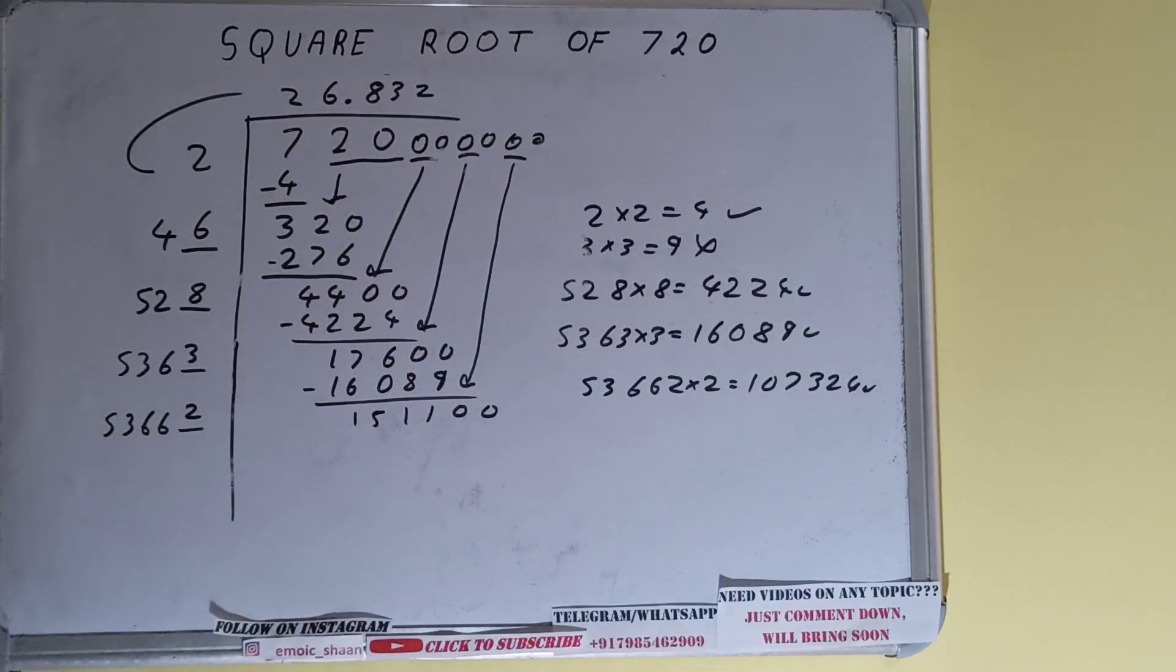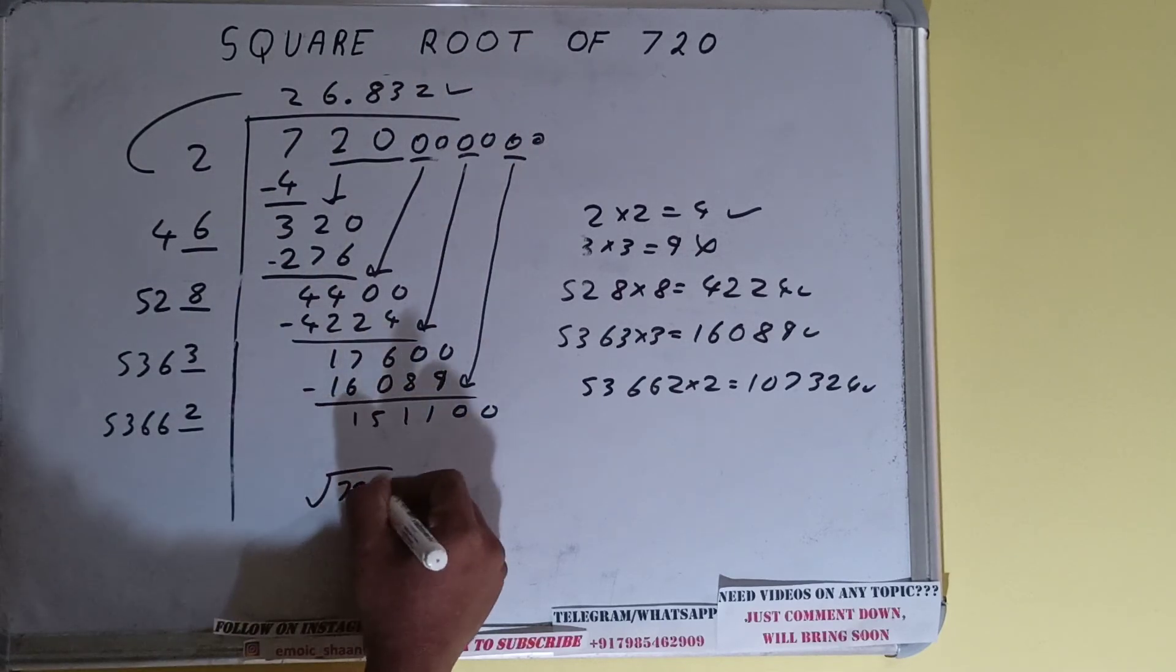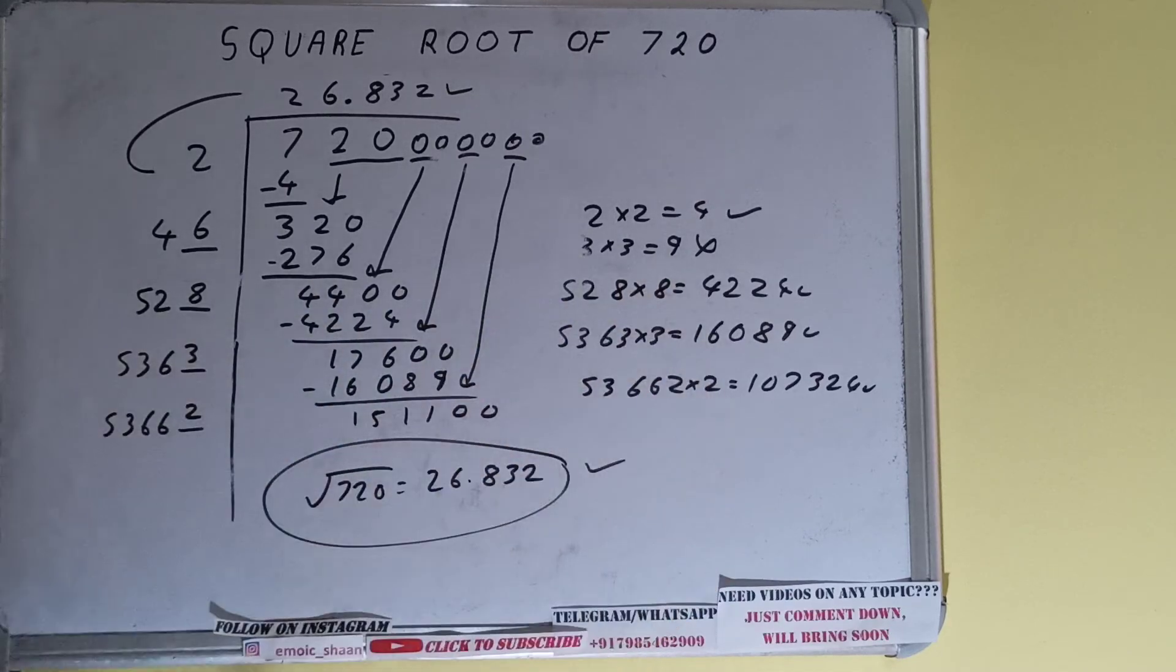So square root of 720 will be 26.832, and that would be the answer. So this is all. If you found the video helpful, please hit the like button, do consider subscribing, and thanks for watching.